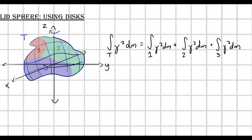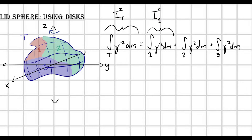Now if I define each of those terms, this is the moment of inertia over my total object — and it's about this z-axis, so I'll put a little z up there. This is equal to the moment of inertia of region 1 about the z-axis, plus the moment of inertia of region 2 about the z-axis, plus the moment of inertia of region 3 about the z-axis.